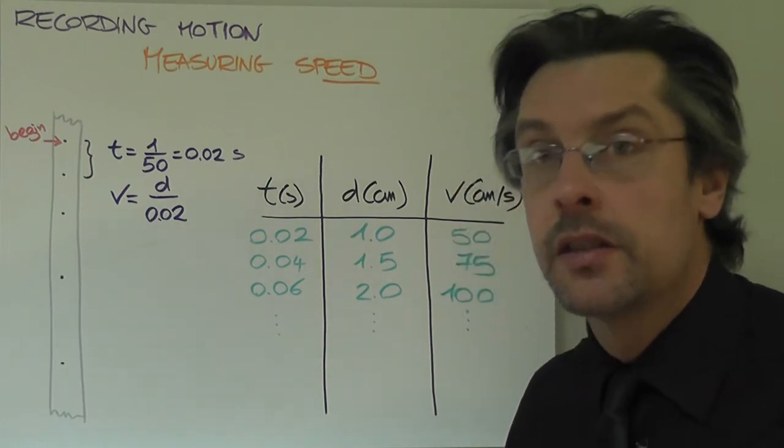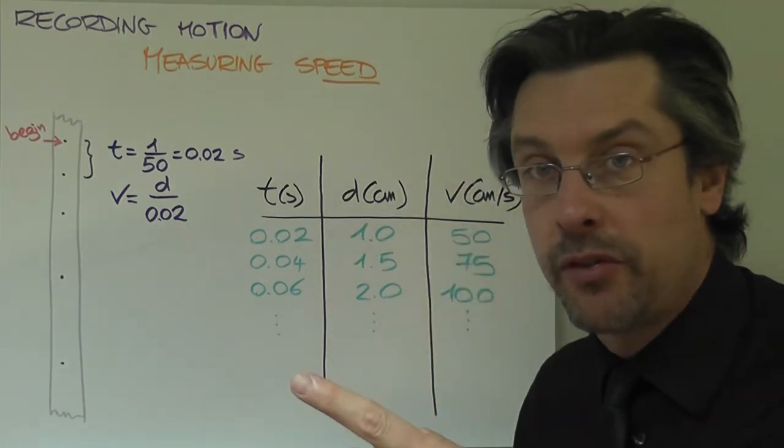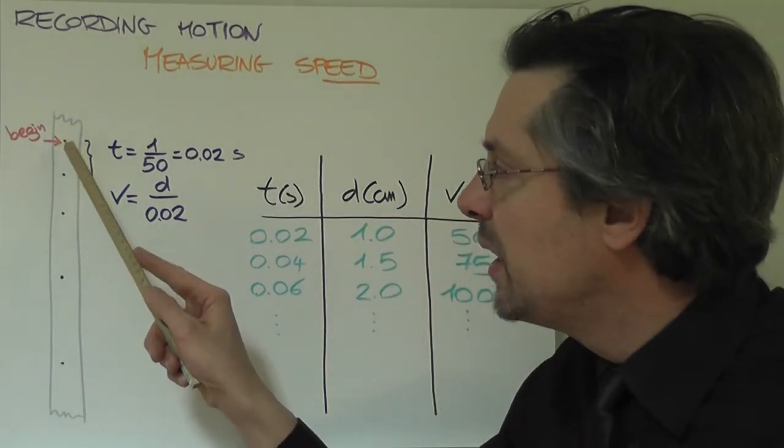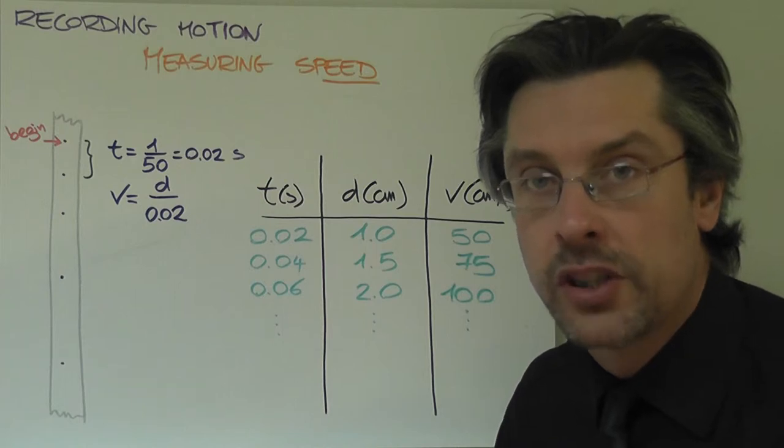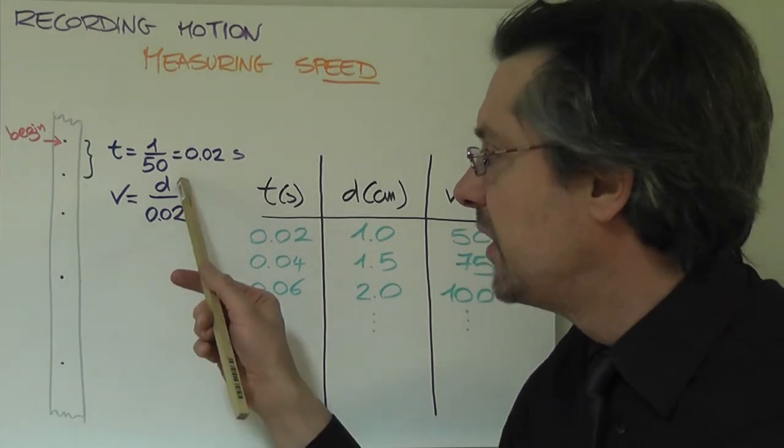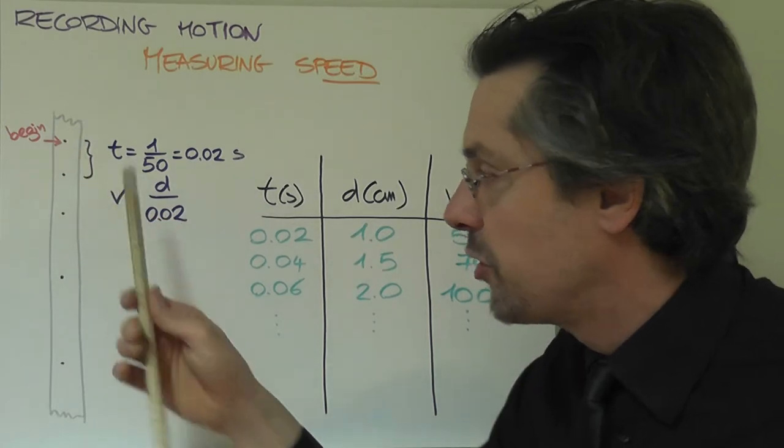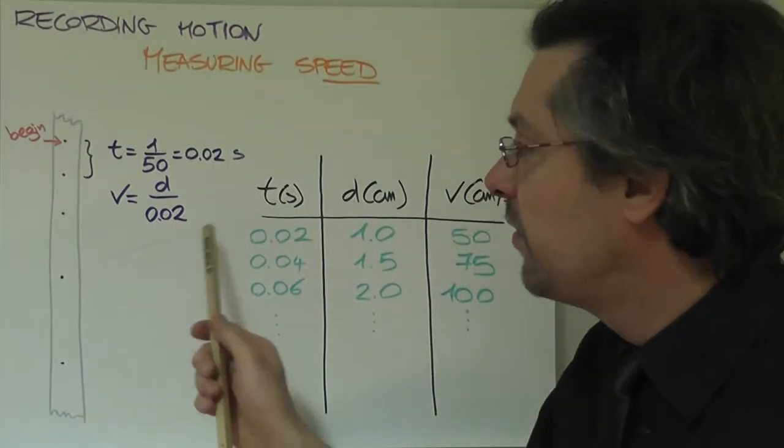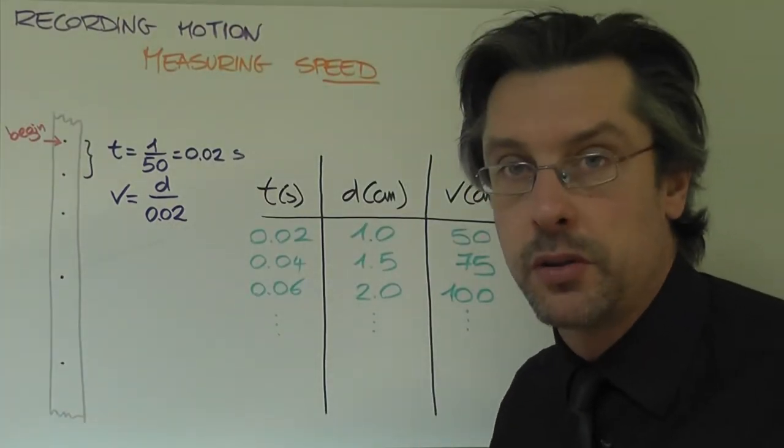That means, again you have to remember the formula for speed, distance divided by time. The speed between two consecutive dots on a ticker timer tape will always be the distance that you measure with your ruler divided by 0.02.